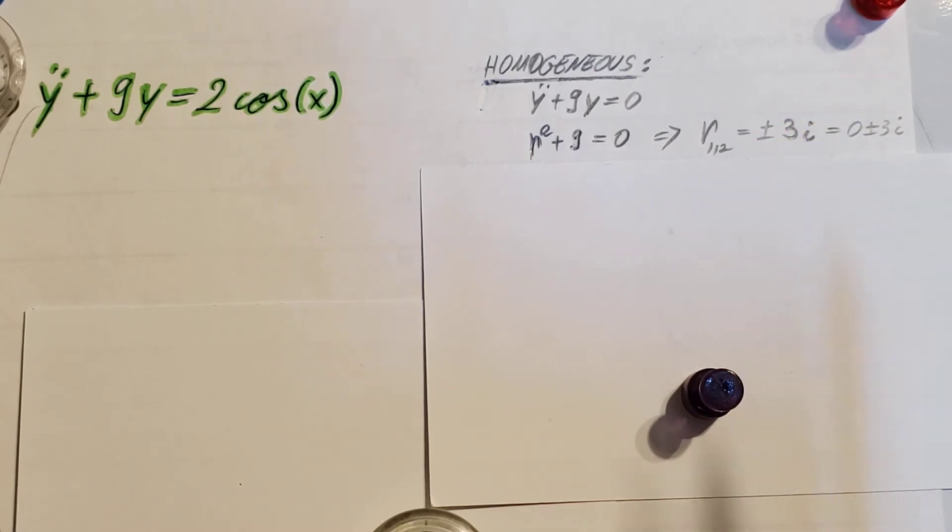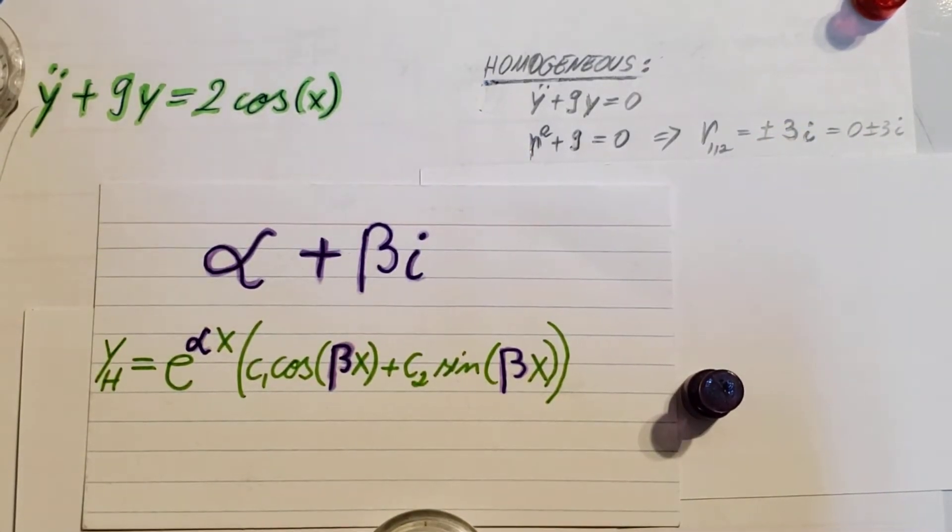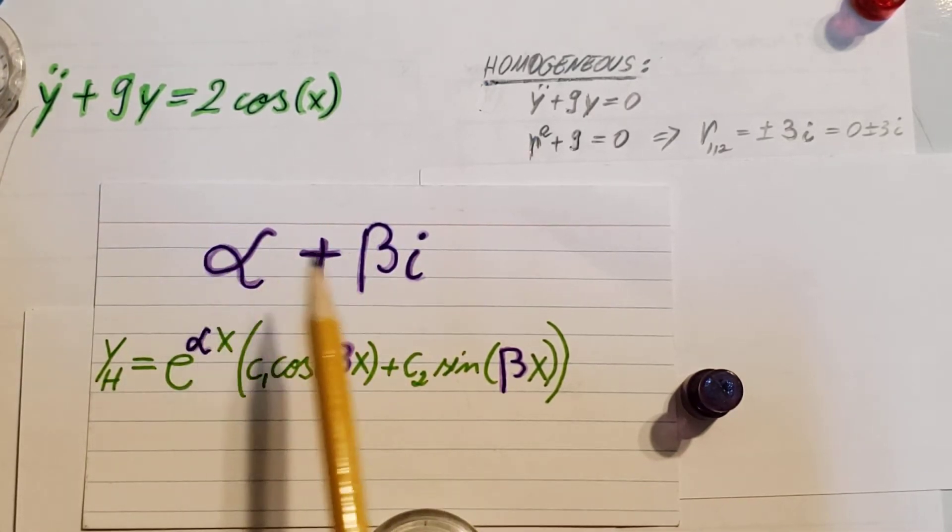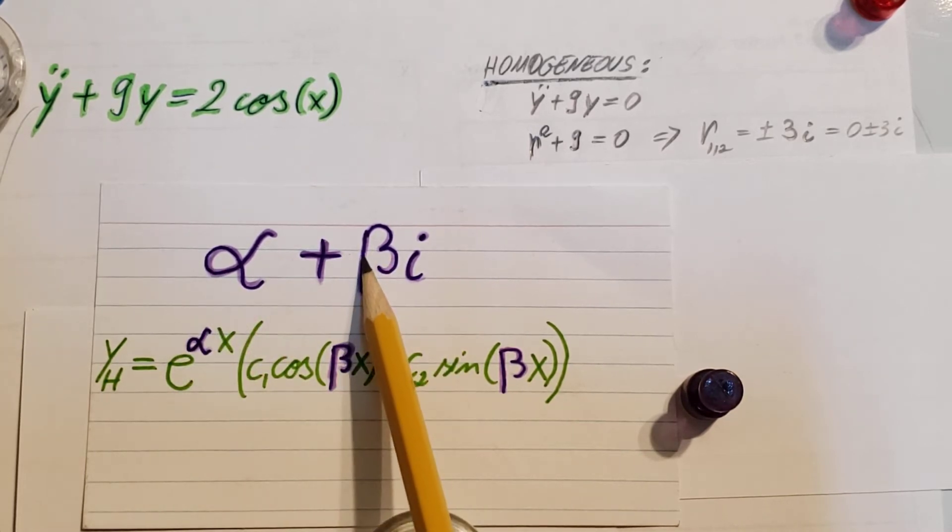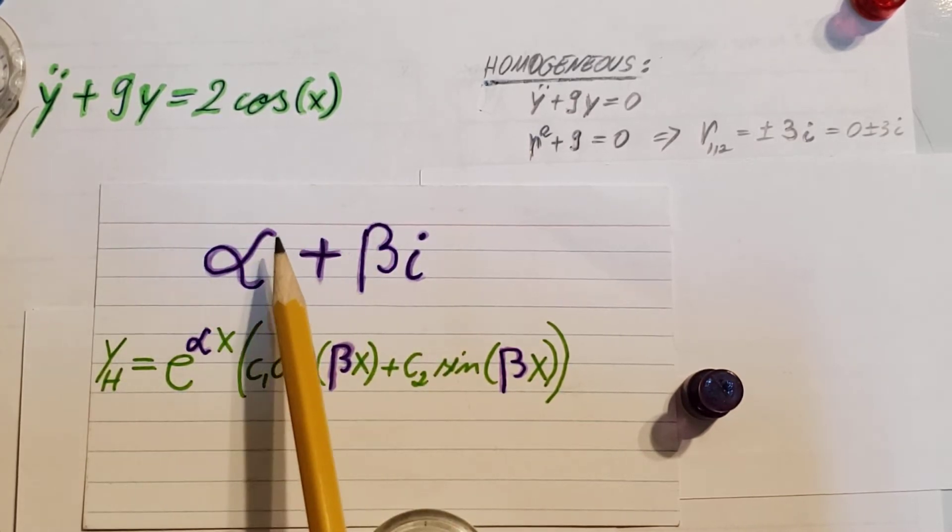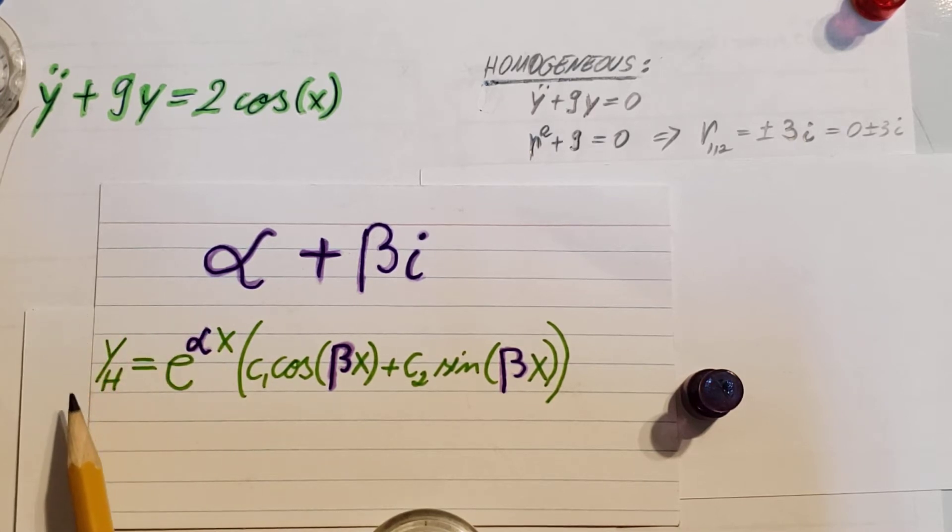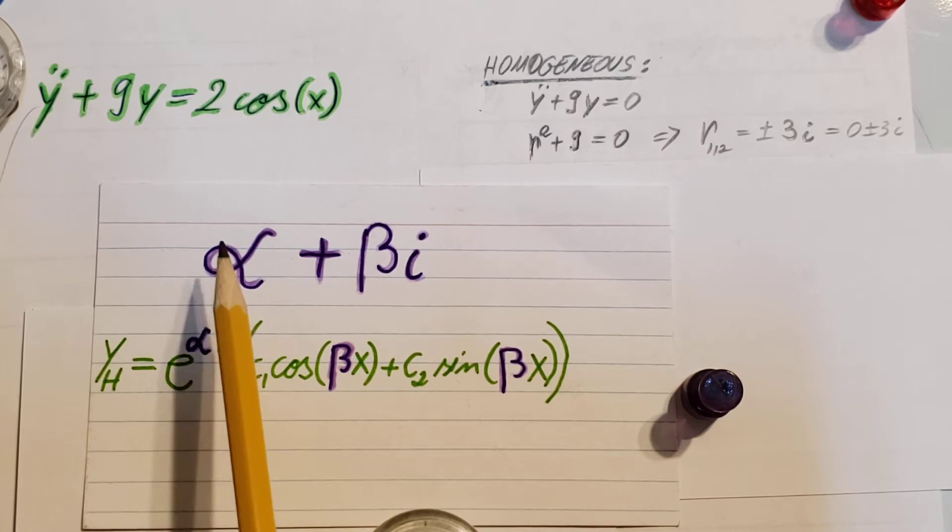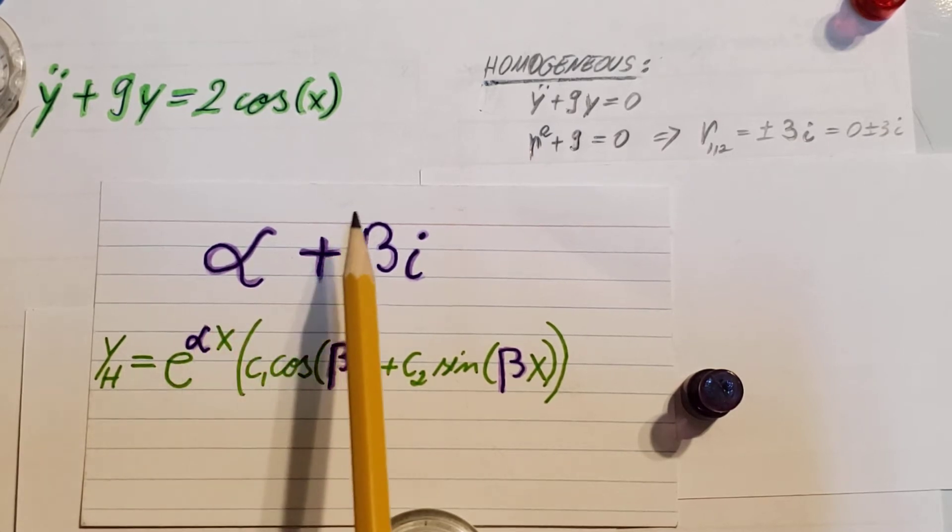For the complex situation, it is alpha plus beta i as my representative of the complex number: real part and imaginary part. In this case, our homogeneous solution will be in this form, and all we have to do is plug our alpha in right here and beta here and here.